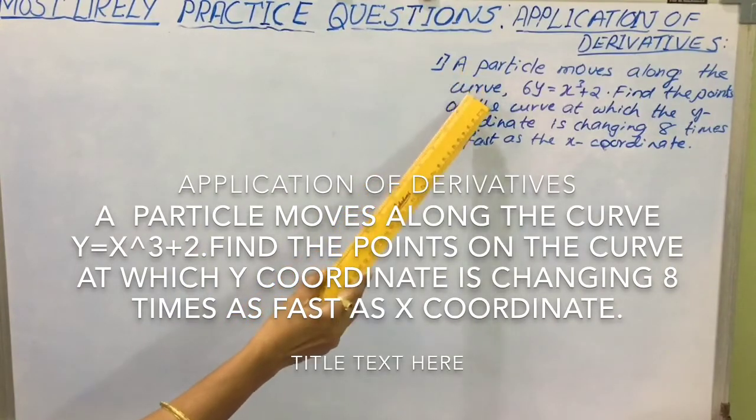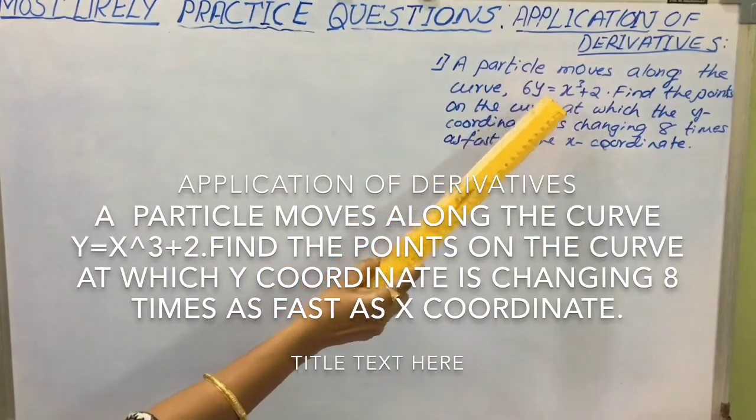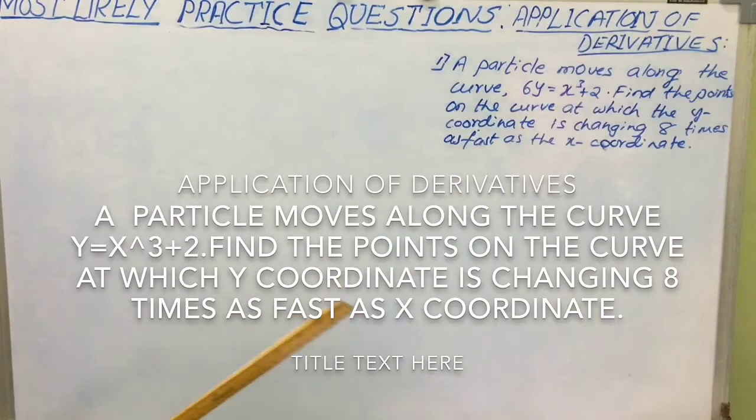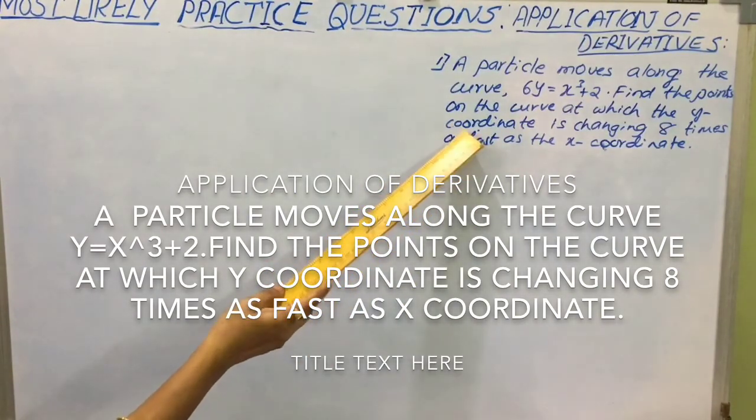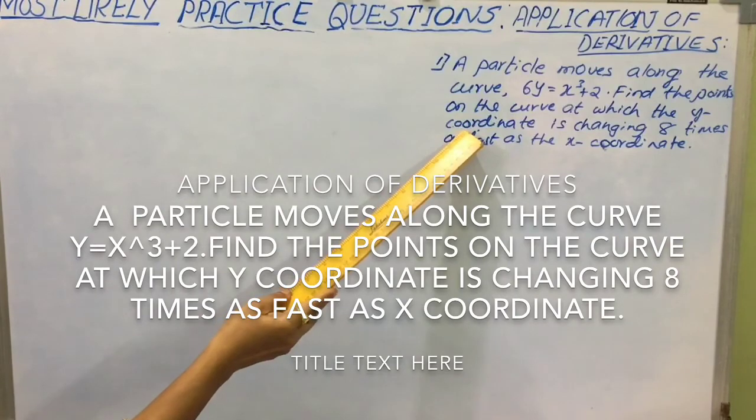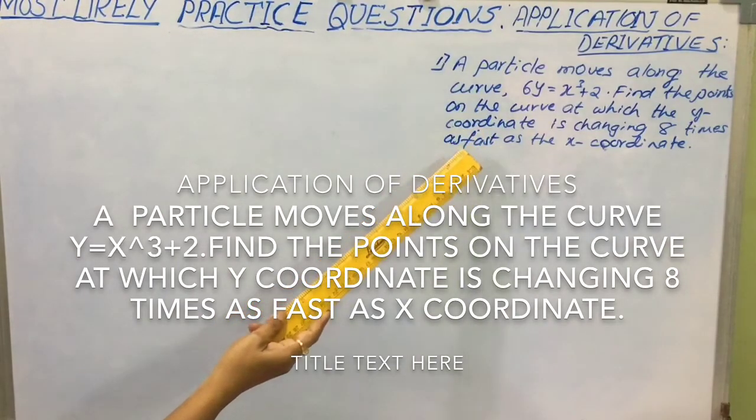A particle moves along the curve 6y equal to x cube plus 2. Find the points on the curve at which y coordinate is changing 8 times as fast as x coordinate.